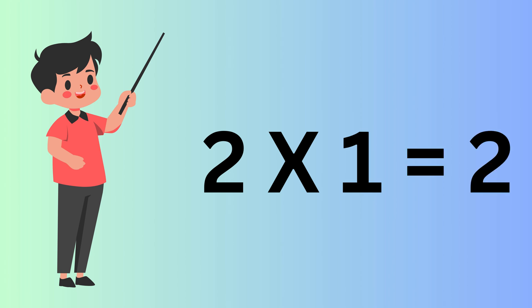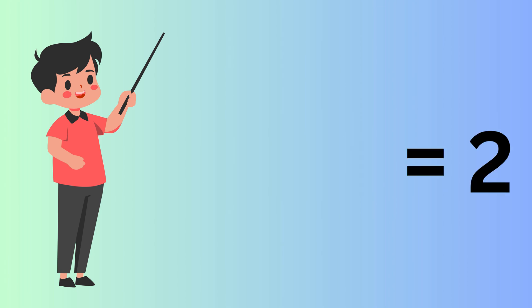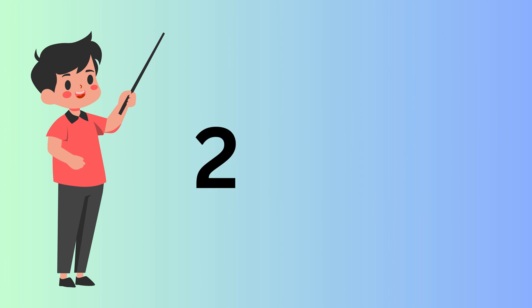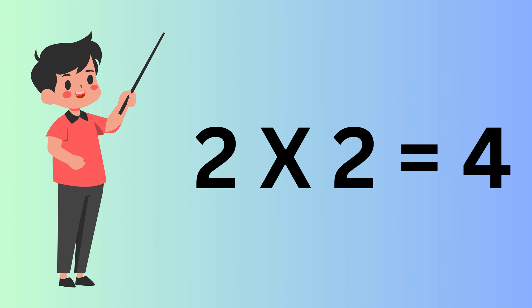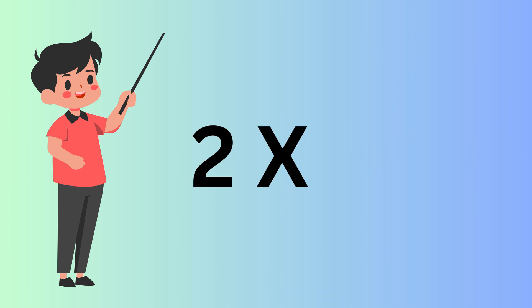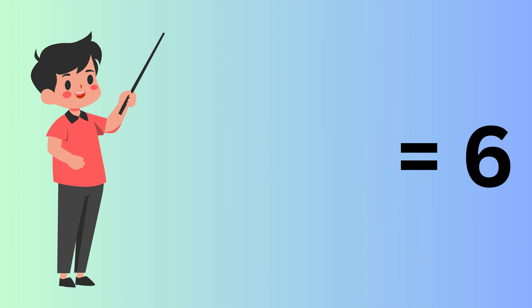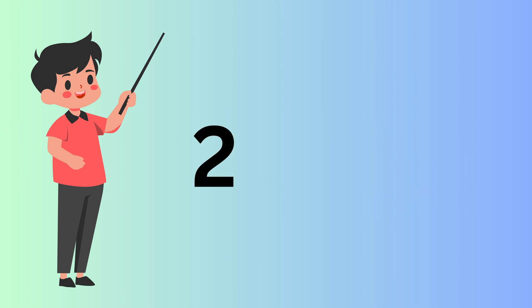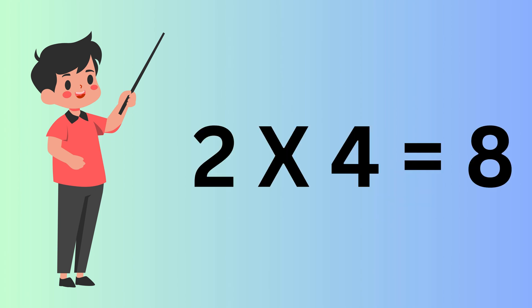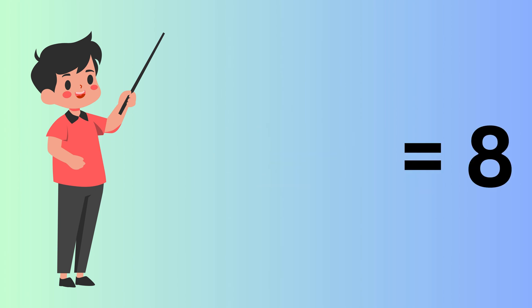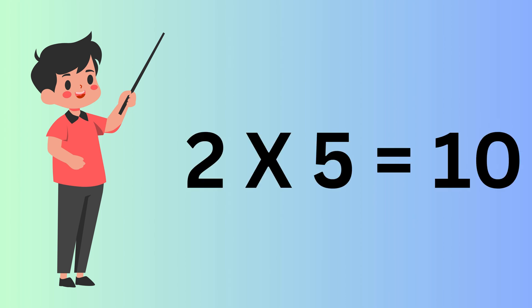Two Ones are Two. Two Twos are Four. Two Threes are Six. Two Fours are Eight. Two Fives are Ten.